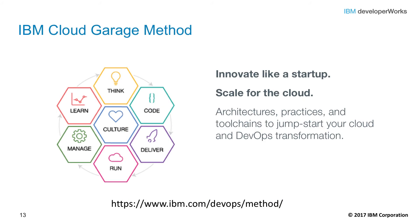Last but not least, let's talk about the IBM Cloud Garage method. It combines industry practices including IBM design thinking, lean startup, agile development, and continuous delivery to build innovative solutions. It outlines a DevOps methodology that focuses around seven practice areas: culture — which is at the center of it all — think, code, deliver, run, manage, and learn. The Garage method brings together the practices, tool chains, and architectures you need to be successful. This wraps up our overview of cloud service models and IBM offerings for the cloud. Thanks for listening.